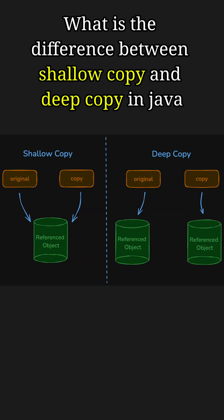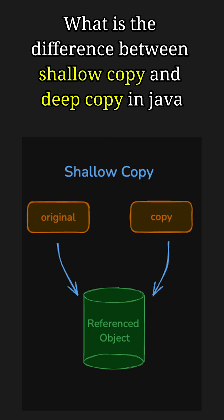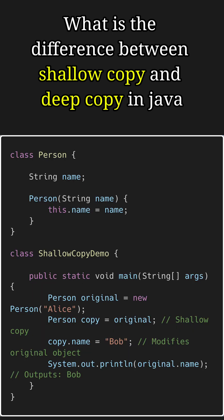A shallow copy creates a new object and copies references to the original object's fields. If the object contains primitives, they are copied directly. However, for fields that are objects themselves, their references are copied rather than creating a new instance.